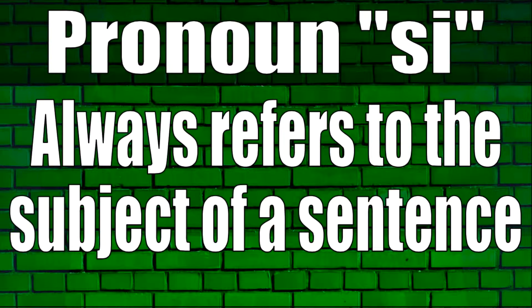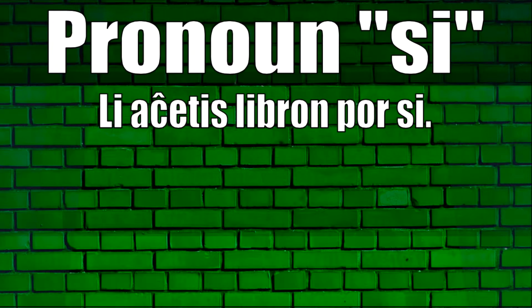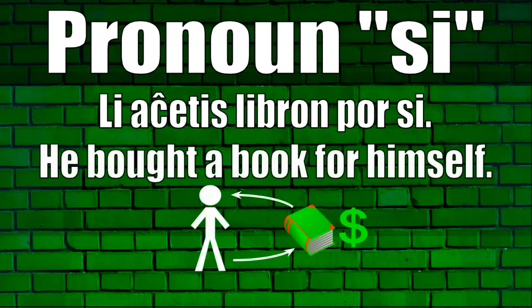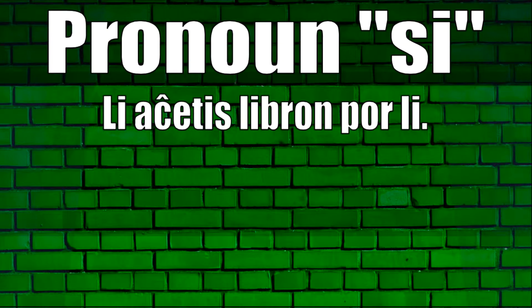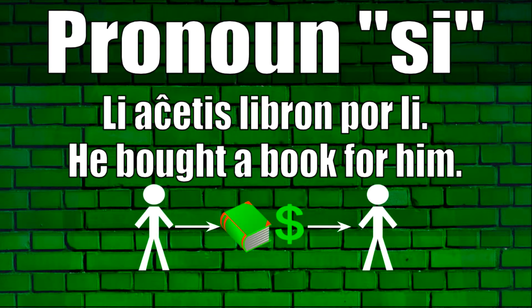This sounds a little bit confusing, but after a few examples I think you'll be able to understand how it's used. The first example is: li aĉetis libron por si. This means 'he bought a book for himself.' You might be wondering why you wouldn't just say li aĉetis libron por li, but if you replace si with li, this translates to 'he bought a book for him,' and 'him' is always going to be another person apart from the subject.